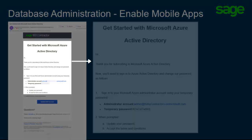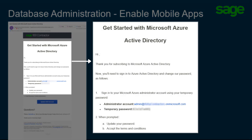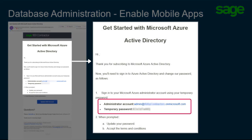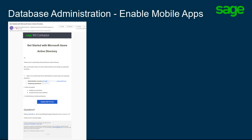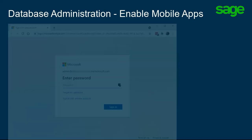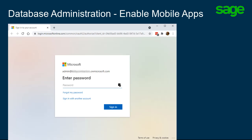The email begins with a thank you for subscribing to Azure. In the email, you'll find the login credentials for the administrator account and a temporary password. Click Update AAD Account to begin. Two Microsoft Online screens display and prompt for your login credentials — first, the administrator account login, then a prompt for the password.